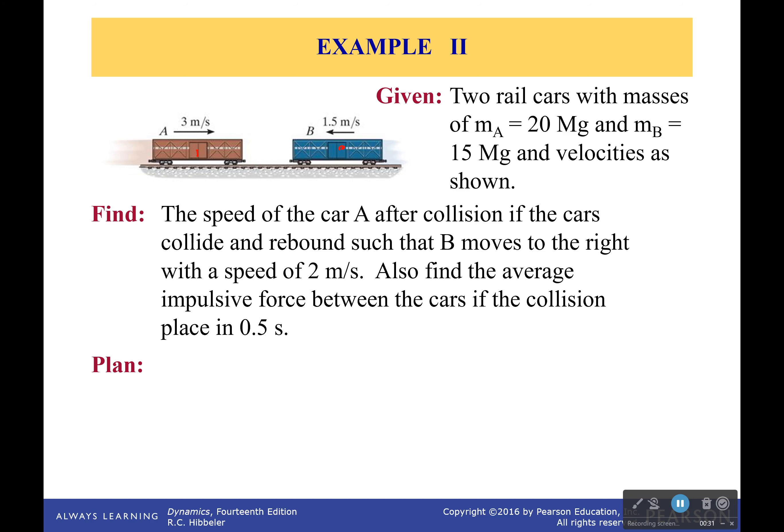And it says the speed of car A after collision, if the cars collide and rebound such that B moves to the right. That's what you're looking for. So car A, we don't know what its velocity is, but after they collide and rebound, so they're bouncing, car B is going to be moving to the right.